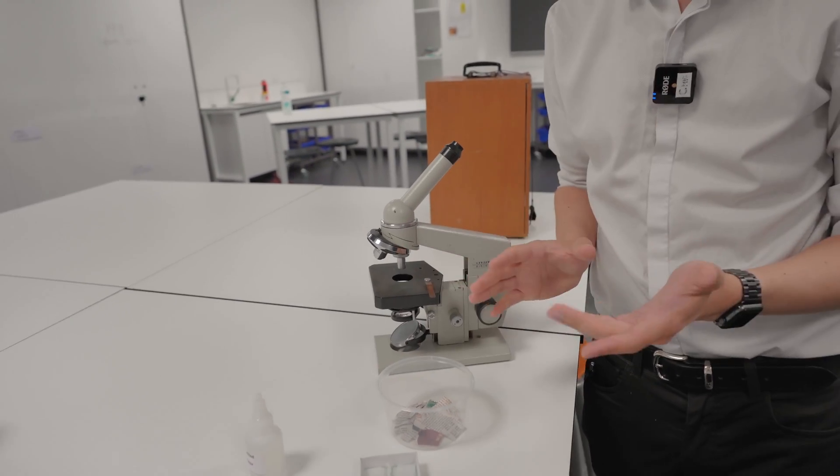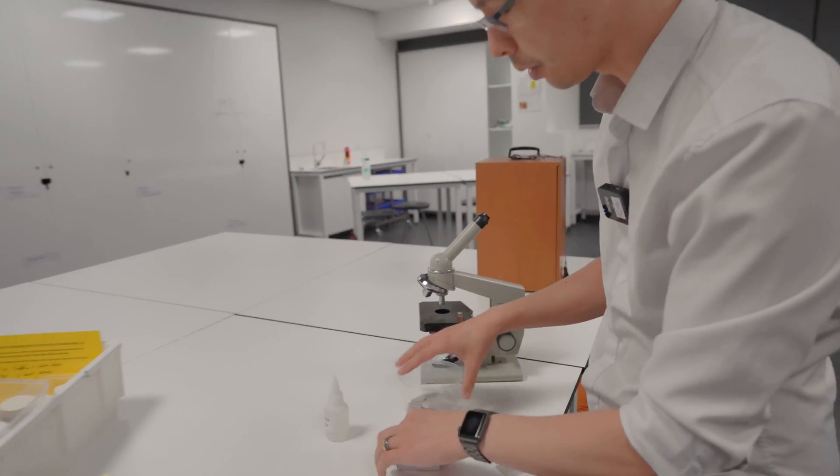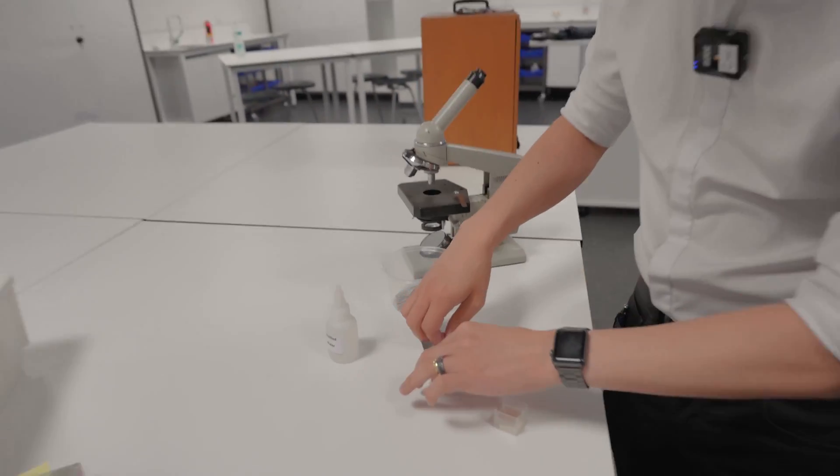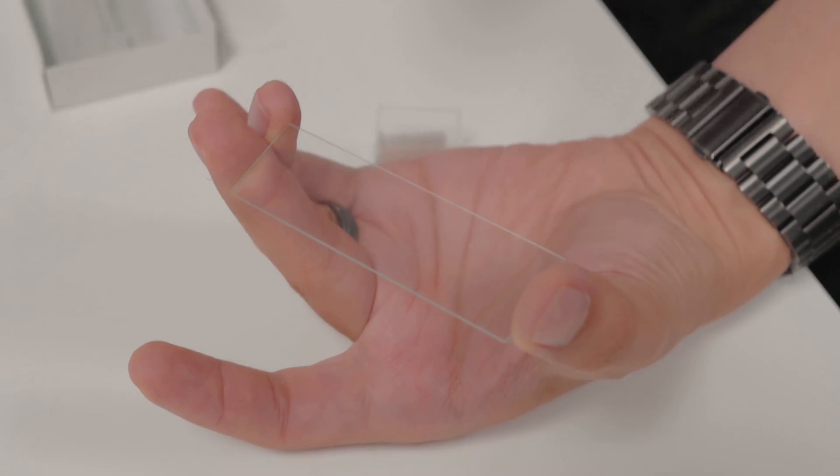We're gonna walk you through how to create a wet mount and then we'll go over the process of how to focus this thing. So you're going to have two items to create a wet mount. This is called a glass slide. The cleaner the better.